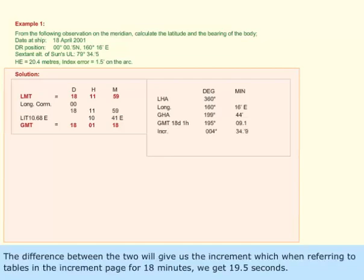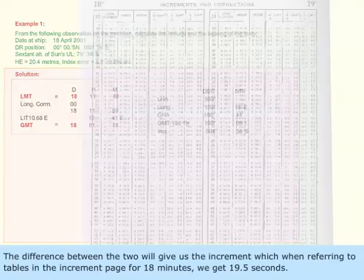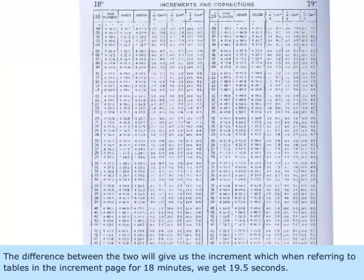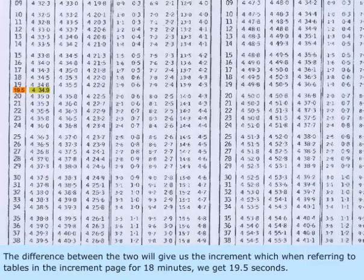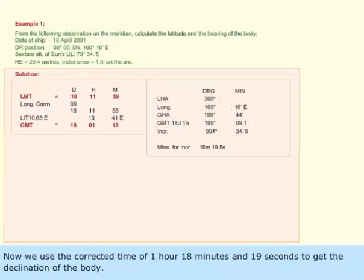The difference between the two will give us the increment, which when referring to tables in the increment page for 18 minutes, we get 19.5 seconds. Now we use the corrected time of 1 hour, 18 minutes and 19 seconds, to get the declination of the body.